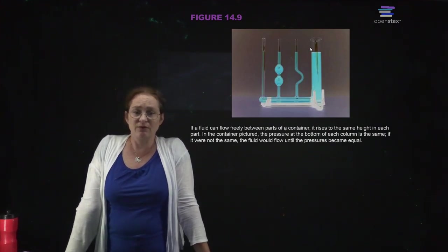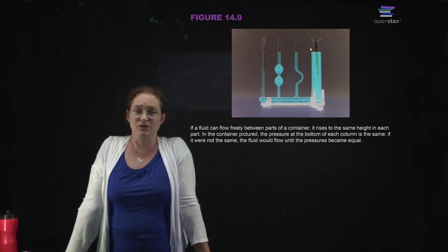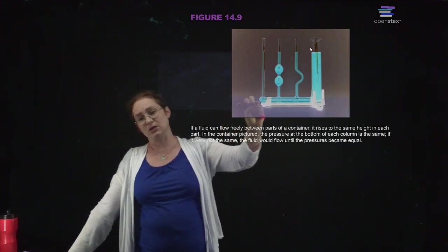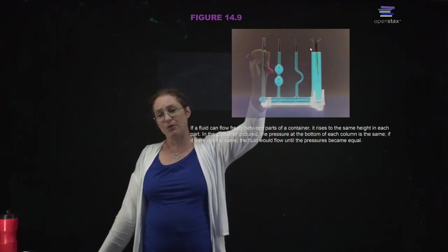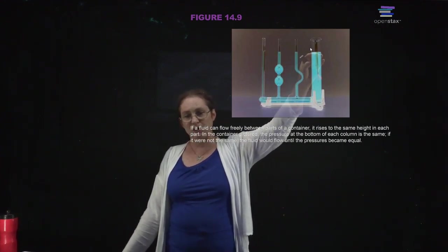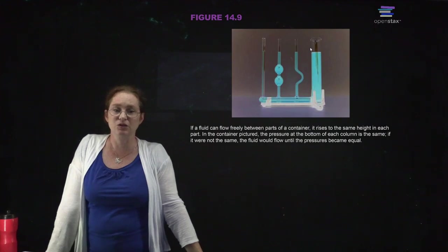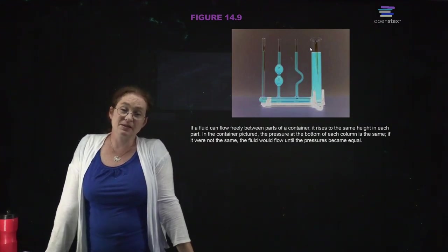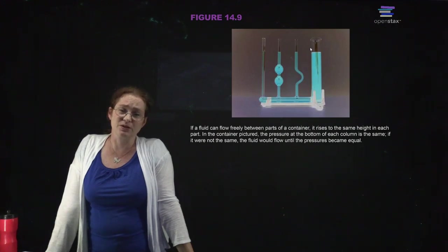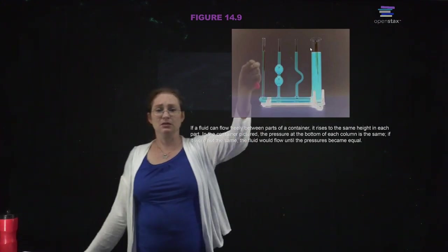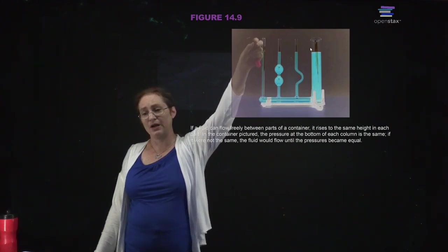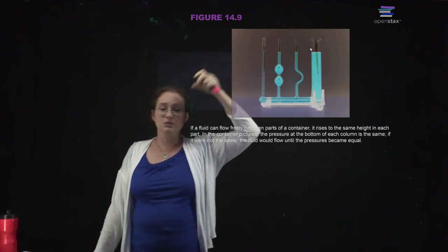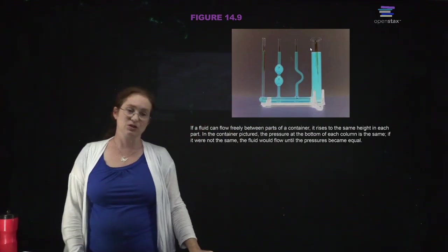If you have a fluid which can readily flow between different parts of a connected container with different widths and shapes, the fluid rises to the same height in each column. It does that because it moves around until the pressure is equal. If there's a difference in pressure at the top of the fluid between different columns, the higher part gets pushed down, so the height of the column changes.